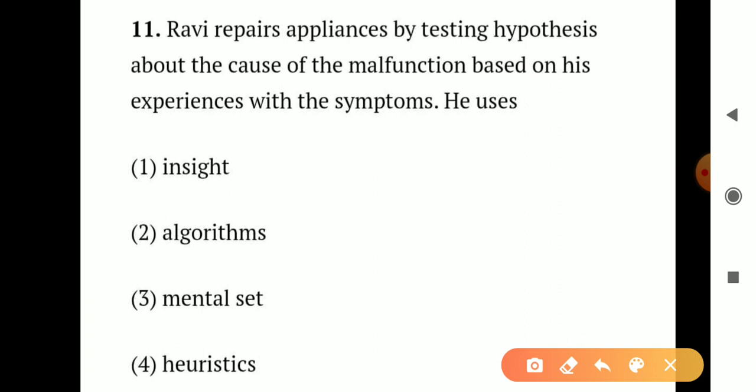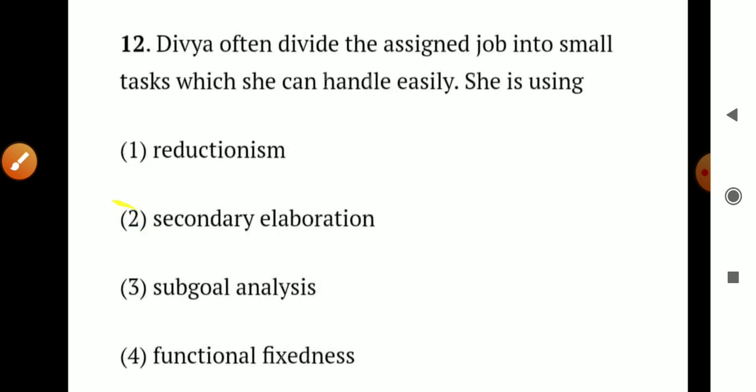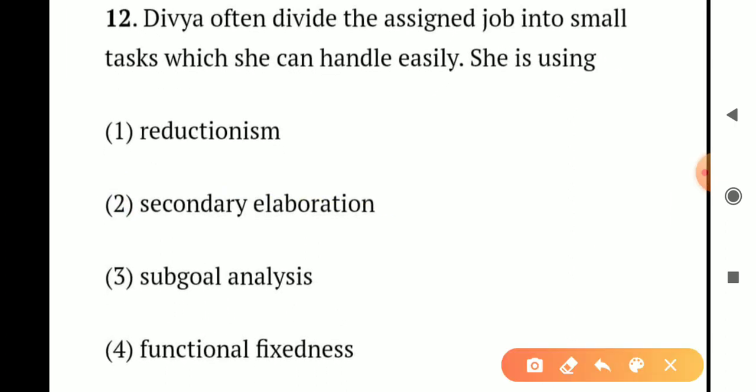Question number 12. Devi has a big task and divides it into smaller tasks which she can handle easily. She is using: Option 1 - reductionism. Option 2 - secondary elaboration. Option 3 - subgoal analysis. Option 4 - functional fixedness. When Devi divides a big job into smaller tasks that she can handle easily, she is using subgoal analysis. So the correct answer is Option 3 - subgoal analysis.